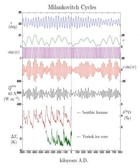They loosely combine into a 100,000-year cycle. The present eccentricity is 0.017 and decreasing.